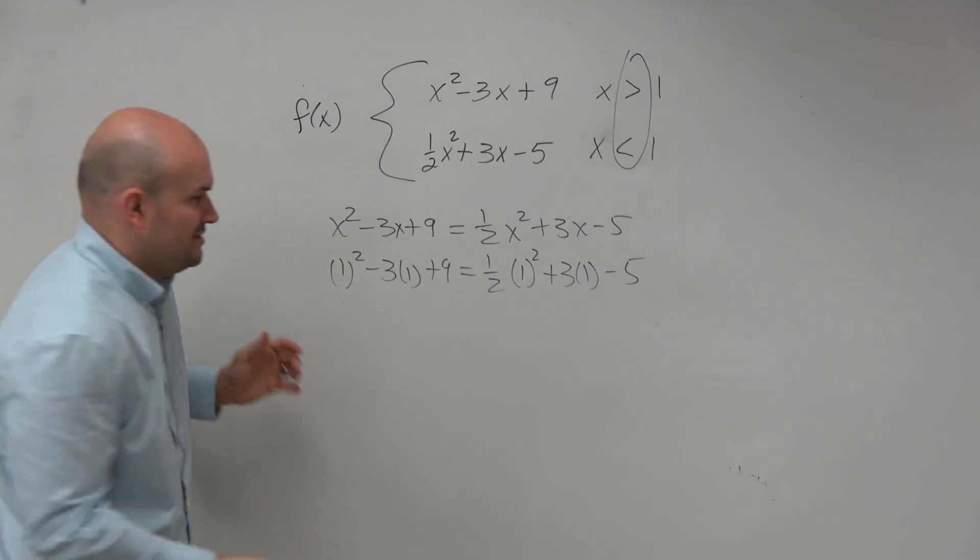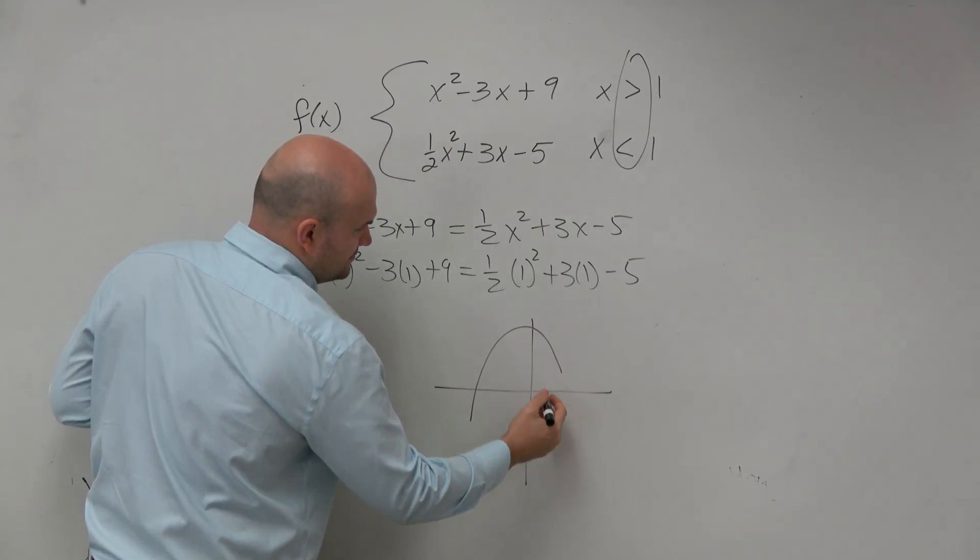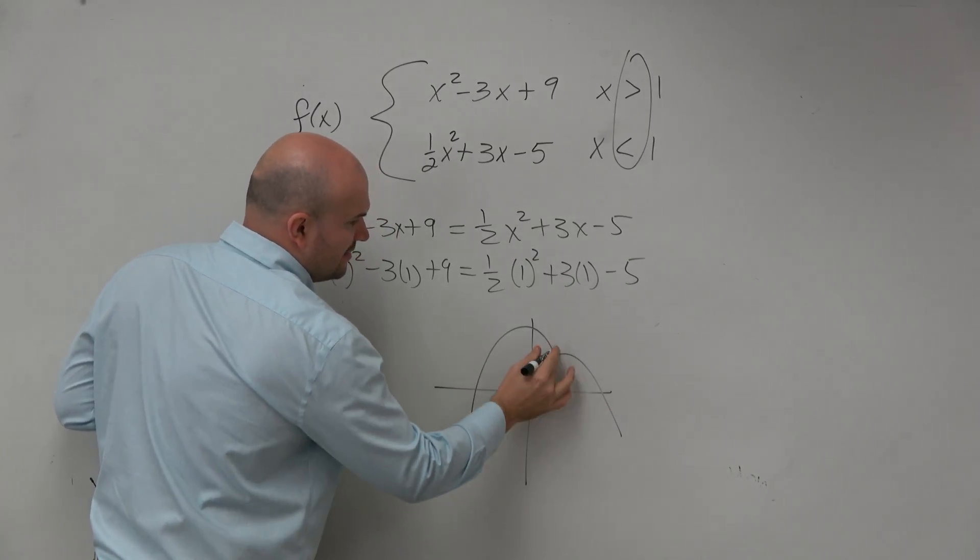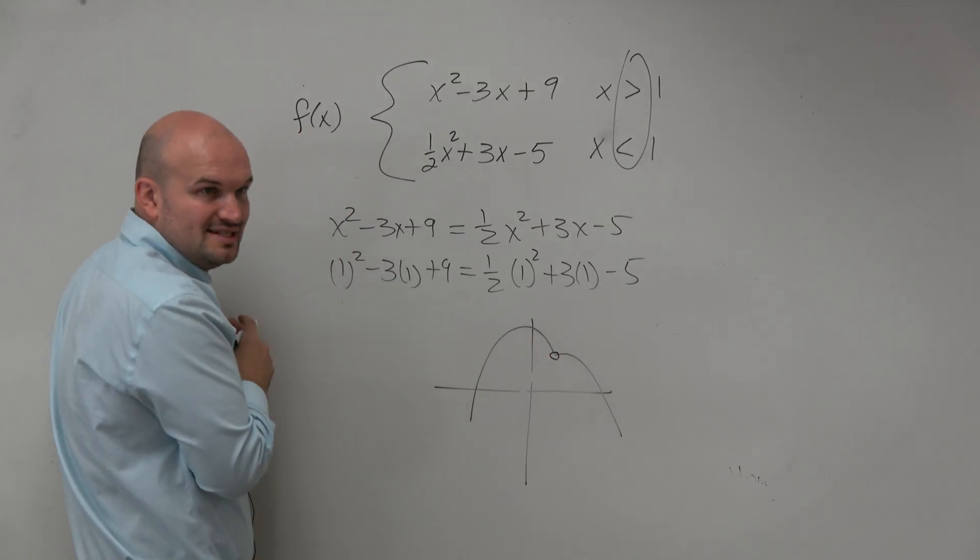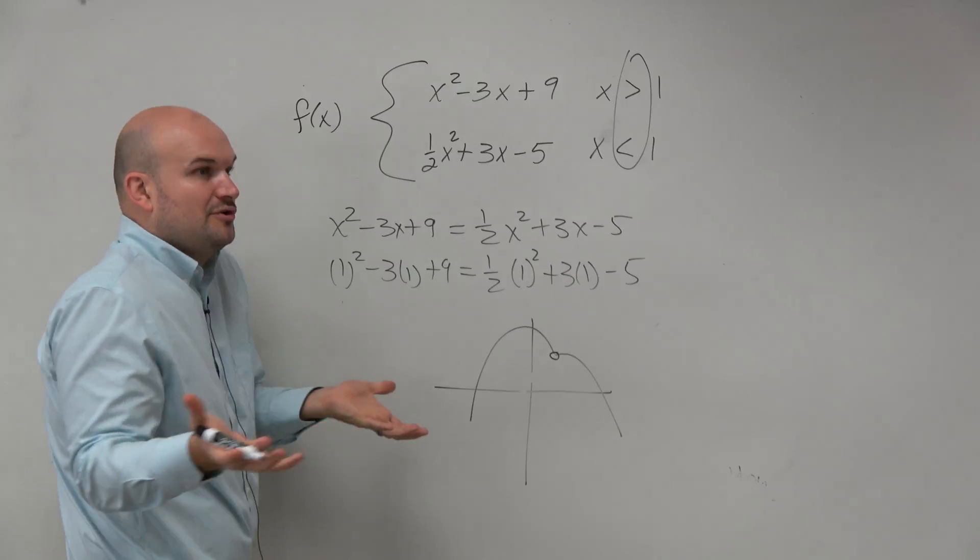So who cares what this graph looks like? Even if it does connect, let's say it connects right there, but there's no equal sign. There's no filled in dot. So therefore, it's never going to be continuous.